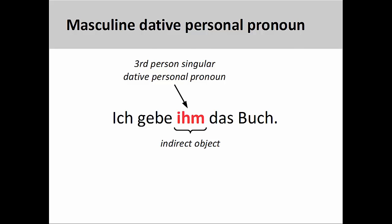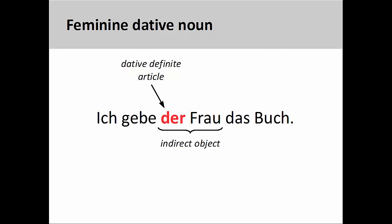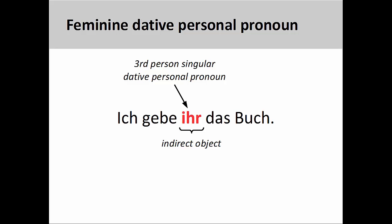Note that the final letter -m in ihm matches the final letter in the definite article dem. If I were to use a feminine noun in the sentence, such as ich gebe der Frau das Buch — I give the book to the woman — the indirect object der Frau would be replaced by the third-person singular dative personal pronoun ihr. Note that the final letter -r in ihr matches the final letter in the definite article der.